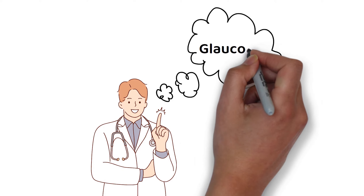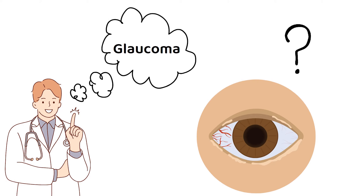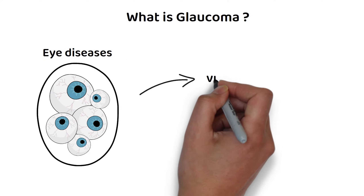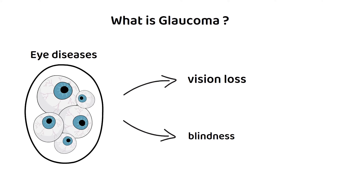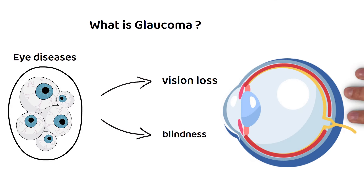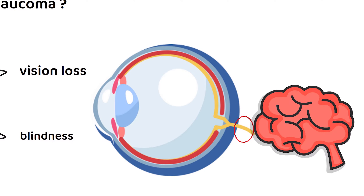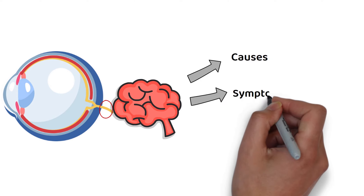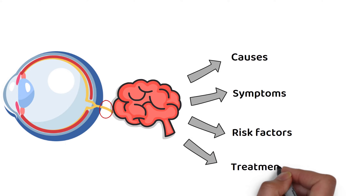Hello and welcome to this video about glaucoma. Glaucoma is a group of eye diseases that can lead to vision loss and blindness. It is caused by damage to the optic nerve, which carries visual information from the eye to the brain. In this video, we will discuss the causes, symptoms, risk factors, and treatment options for glaucoma.